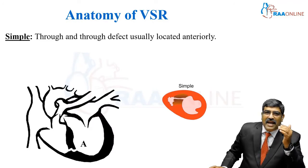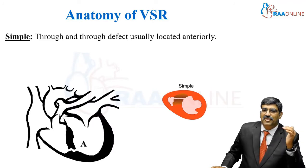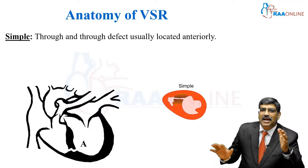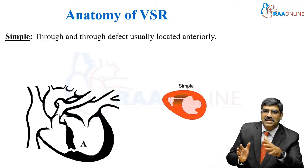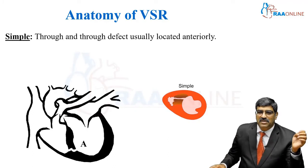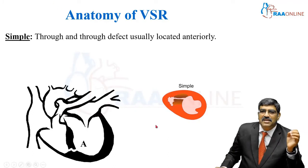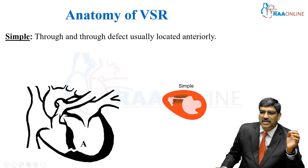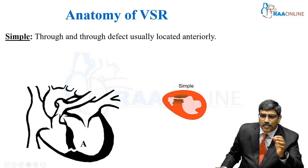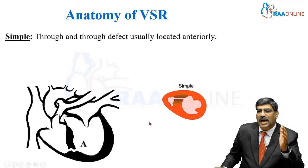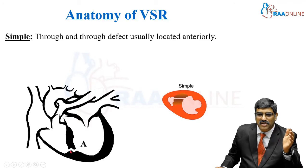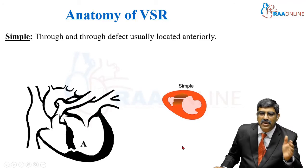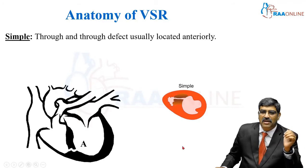Coming to the classification of VSR, it can be a simple VSR or a complex VSR. Simple VSR is nothing but a through-and-through defect — there is a simple through-and-through defect, usually located in the anterior part of the septum. This is a simple VSR.